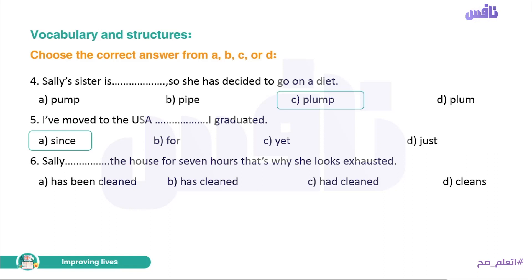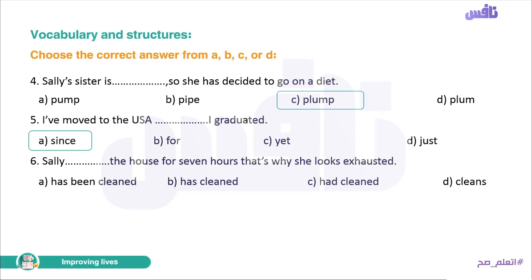Number six. 'Sally has been cleaning the house for seven hours, that's why she looks exhausted.' Options: has been cleaned, has cleaned, had cleaned, or cleans. 'Has been cleaned' is passive — but Sally is the doer, so passive doesn't work. The answer is 'has cleaned' — present perfect — because the event started in the past and its effect is still present, shown by 'that's why she looks exhausted.' 'Had cleaned' is past perfect, meaning an event completed before another past event, so it doesn't fit.